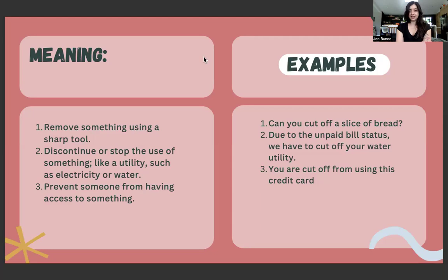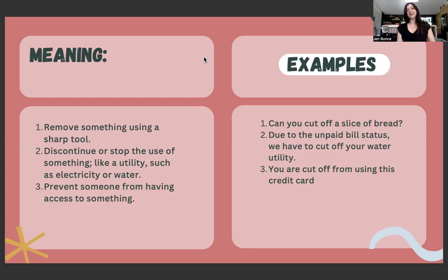Definition number two: discontinue or stop the use of something like a utility bill, such as electricity or water. If you don't pay your water bill, the water company will cut you off. I also must mention that with the phrasal verb cut off, the spelling stays the same with each verb tense — cut off in the present, cut off in the past, and add will with cut off for the future. Example two: due to the unpaid bill status, we have to cut off your water utility.